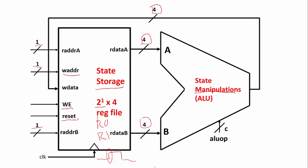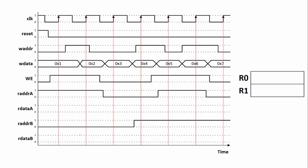What we care about is what is on the outputs: read data A and read data B, given the sequence of events. We know which data is coming out by looking at read address A and read address B. Looking at our timing diagram, the first thing you'll notice is that reset is one here and zero everywhere else, so this tells us that register zero and register one are both zero to start.